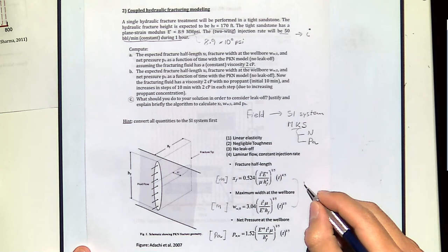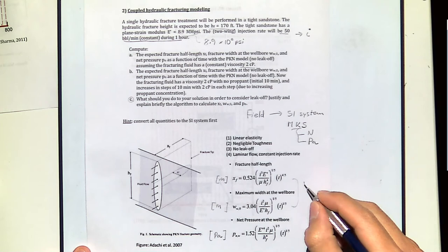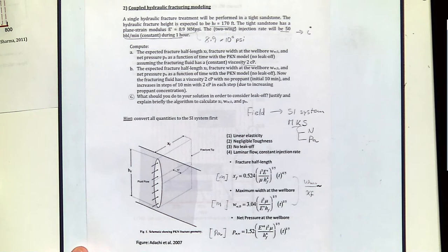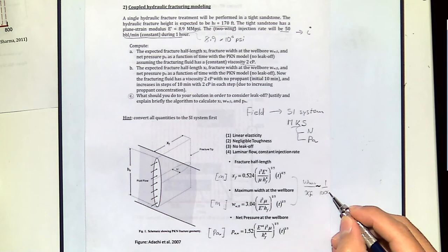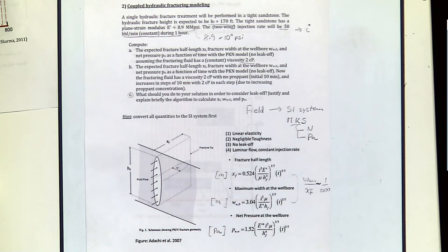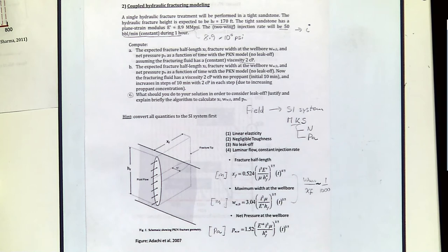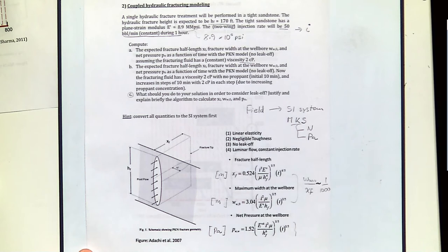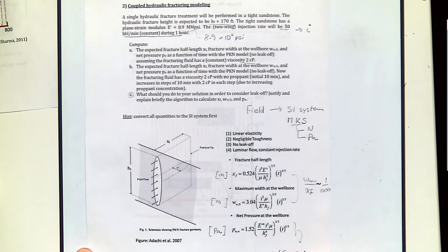Pay attention to the ratio of width to the wellbore and fracture length. You will realize how thin these fractures are — usually in the range of 1 over 1,000. So with a width of 1, your length is going to be 1,000. Also keep an eye on the absolute value of the net pressure, because we're going to see today that we can compare that to S2 minus S3. That could be smaller or larger, and that's going to affect the shape of the hydraulic fracture.